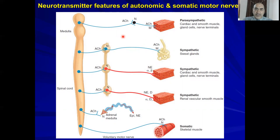Remember this very important figure. Here is the CNS — brain and spinal cord. Any neuron coming out of the central nervous system will release acetylcholine at the end. This acetylcholine will act on nicotinic receptors. The neurotransmitter is acetylcholine and the receptor is nicotinic.